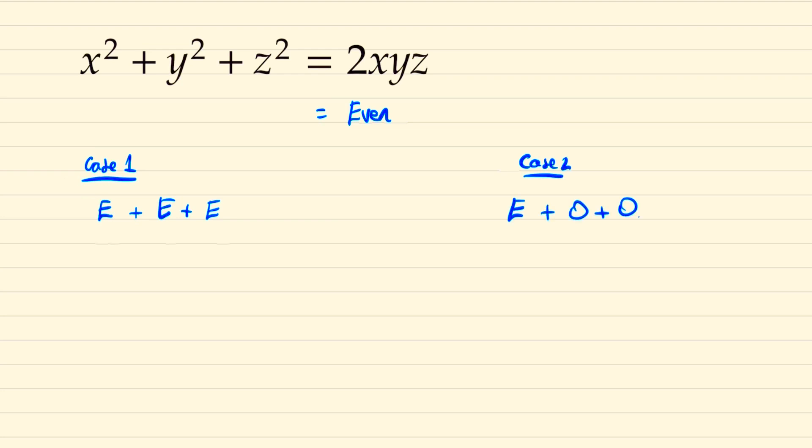Now if we consider case 1, where we have three evens, there must be some power of 2, which is the highest common factor of these three terms. So we can divide each of these by some power of 2 to the n and remain within integers. But by doing so we would have moved into case 2, where we would now have two odds and one even.